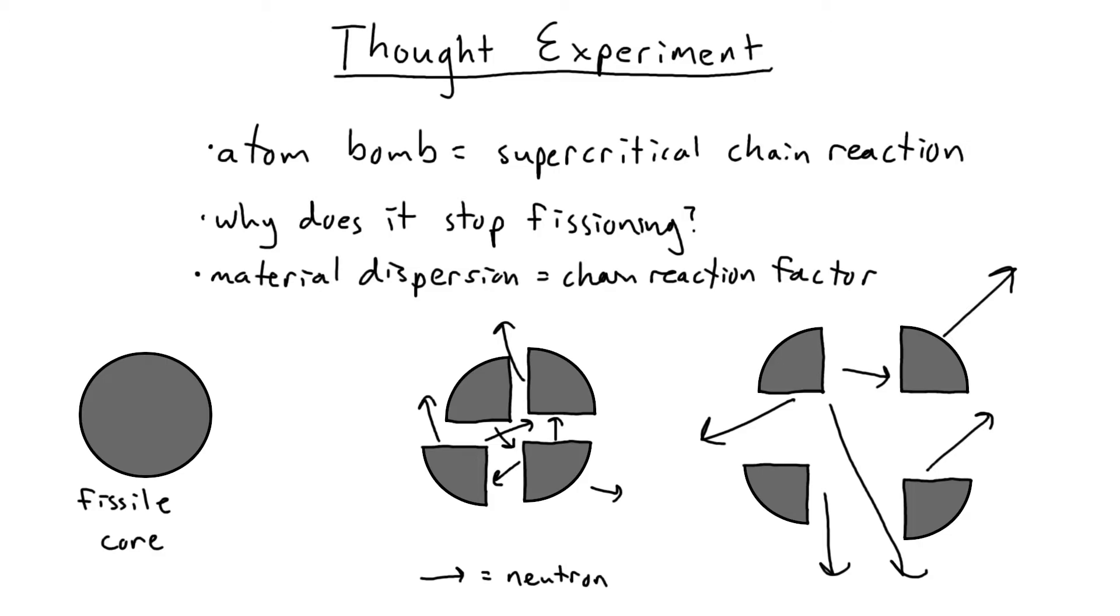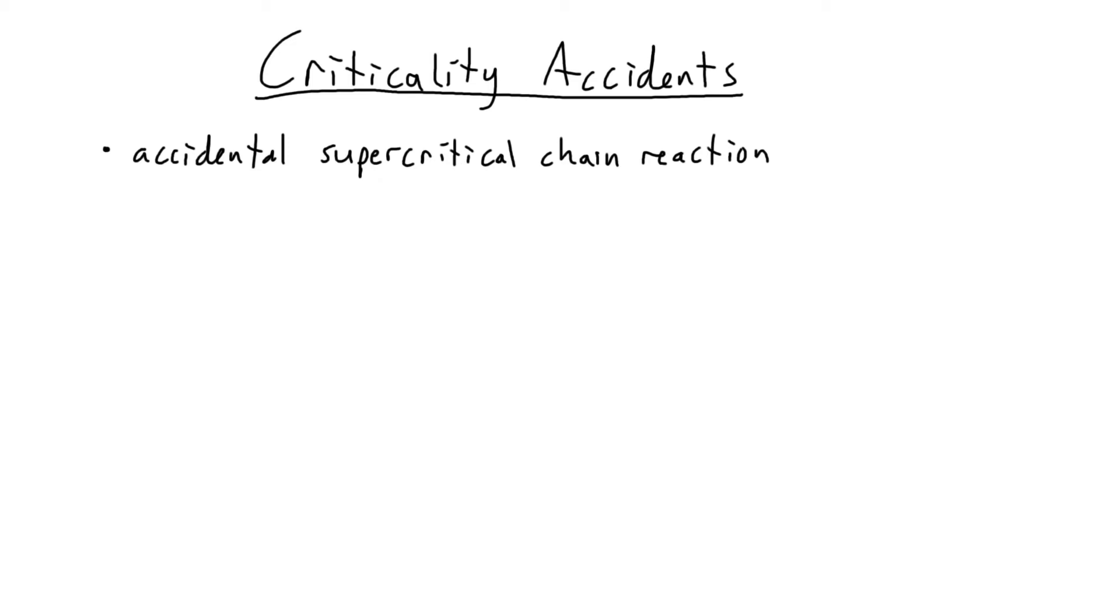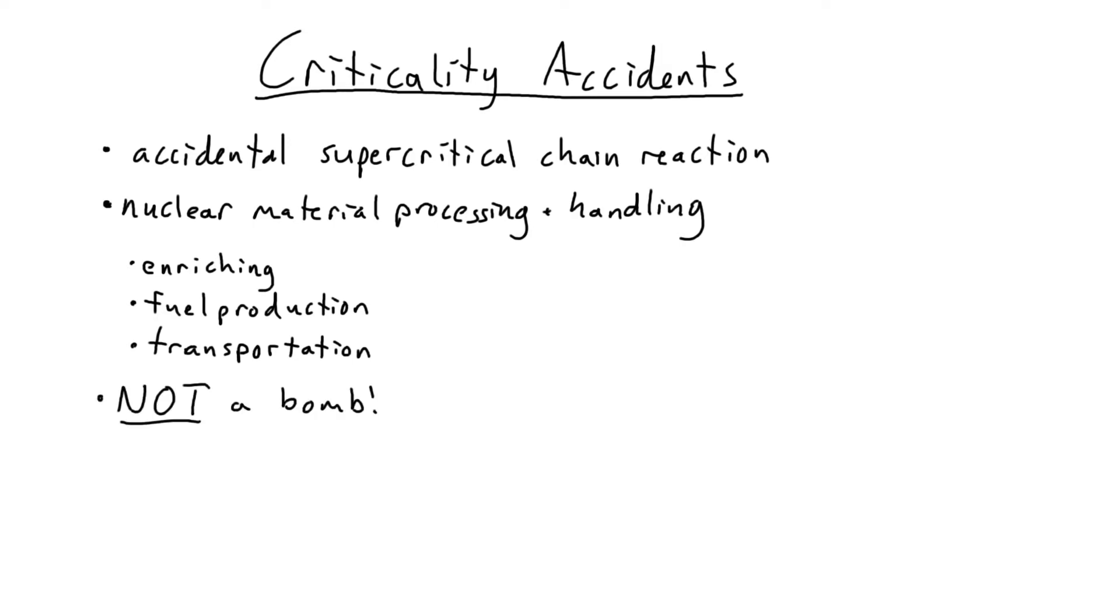Wait, what was that other thing I mentioned? Criticality accidents? A criticality safety accident is when fissile material is arranged in such a way that you get a supercritical chain reaction in nuclear material processing and handling, like when enriching fissile material, producing reactor fuel, or during the transportation of fissile material. While not anywhere near as powerful as an atomic bomb, they are extremely dangerous in terms of radioactive dose to humans. Not as many people are familiar with criticality accidents, so I plan to spend a fair amount of time discussing them.